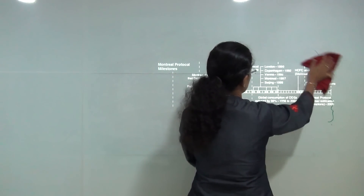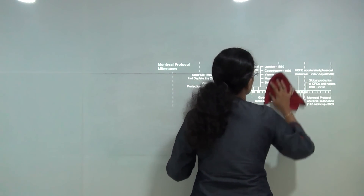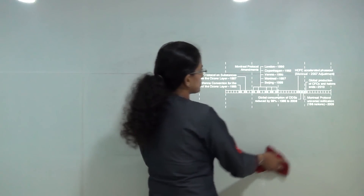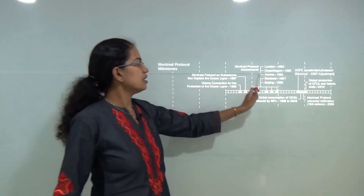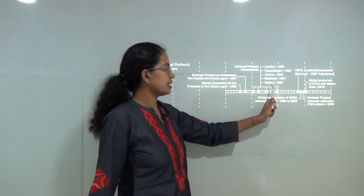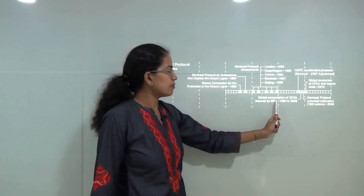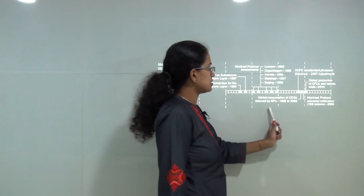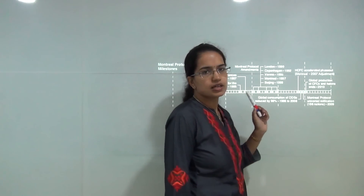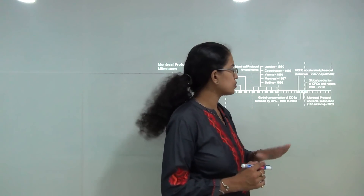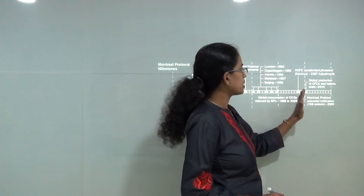The five amendments to the Montreal Protocol took place in London, Copenhagen, Vienna, Montreal, and Beijing. Global consumption of ozone-depleting substances was reduced by 98 percent by the year 2008.